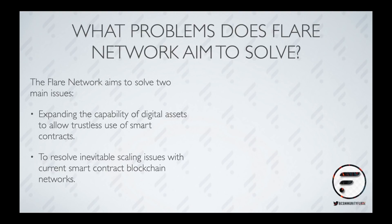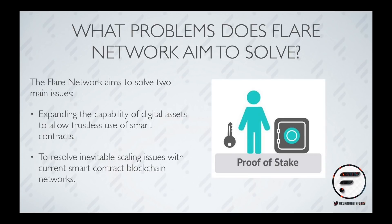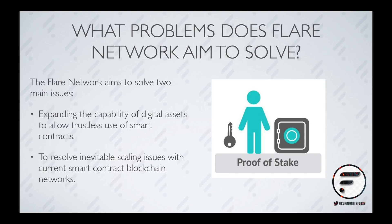The second issue that Flare Network aims to resolve is the inevitable scaling issues with current smart contract blockchain networks. The majority of new networks use proof of stake or its variants. These protocols derive network safety from their native token. For example, once Ethereum switches to proof of stake in Ethereum 2.0, the security of the network will be entirely dependent on the validators who stake the token — and by extension, the amount of it that is staked.